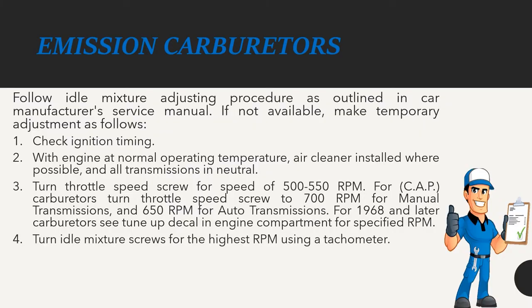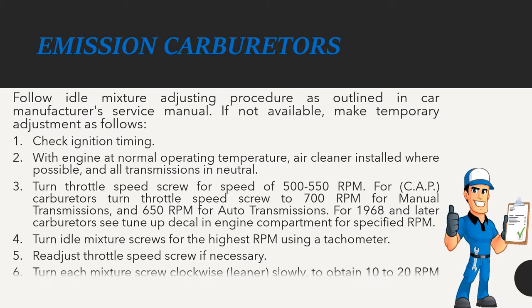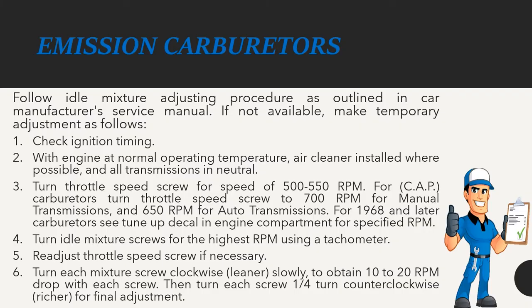Turn idle mixture screws for the highest RPM using a tachometer. Readjust throttle speed screw if necessary. Turn each mixture screw clockwise (leaner) slowly to obtain a 10–20 RPM drop with each screw. Then turn each screw one-fourth turn counter-clockwise (richer) for final adjustment.